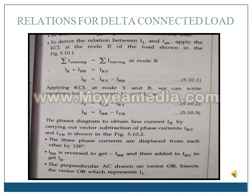To show the line currents on the phasor diagram, we apply Kirchhoff's current law at nodes R, Y, and B. At node R, the incoming currents are IR and IBR, so IR bar plus IBR bar equals IRY bar. Therefore, IR equals IRY bar minus IBR bar. Similarly, applying KCL at nodes Y and B gives respective equations for IY and IB.